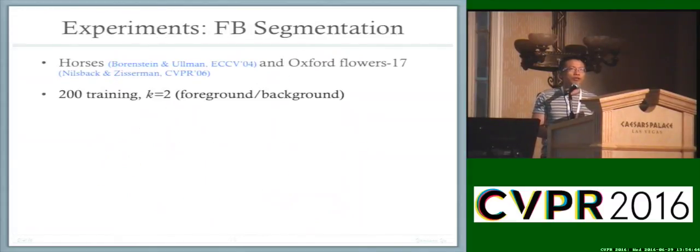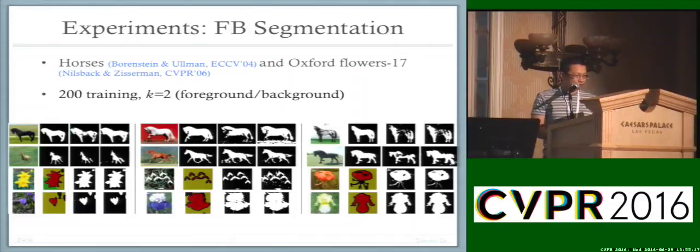The next experiment is foreground-background segmentation. We applied this to two datasets: the Horses dataset and the Oxford Flower 17 dataset. Because these datasets come with ground truth segmentation, in each case we chose 200 images as training examples. In this example we have two clusters: foreground and background. In this figure, I'll show you a few examples. The first column is the original image, the second column is the ground truth segmentation, and the third and fourth columns are results produced by our algorithm. Since k equals 2, we have a simplification, which is why you see two results from our algorithm. In these examples, the clusterings we produced are fairly close to ground truth.